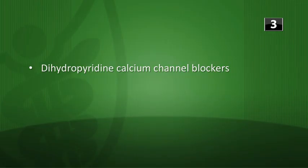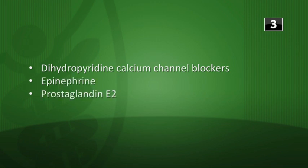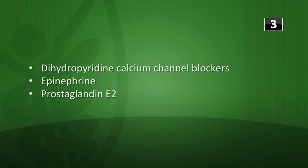What substances act on smooth muscle myosin light chain kinase, and how does this affect blood pressure? The dihydropyridine calcium channel blockers, epinephrine acting at beta-2 receptors, and prostaglandin E2 all relax vascular smooth muscle, leading to vasodilation and a decrease in blood pressure.